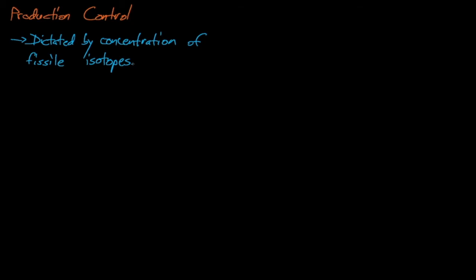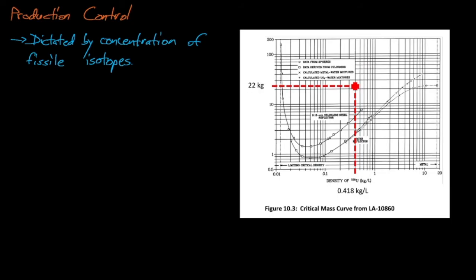If we want to think about it using critical mass curves, increasing the fissile isotope inventory can move us closer to and eventually above the critical mass curve.